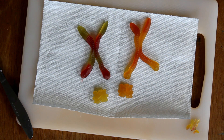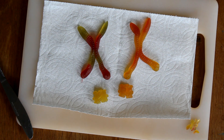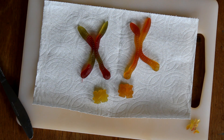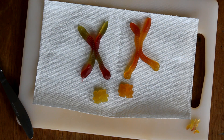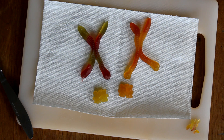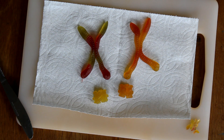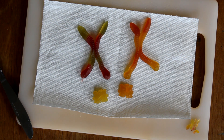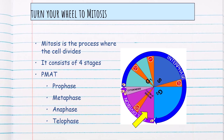Now we are ready to start mitosis. As G2 ends, we begin mitosis — the actual process of cell division. This is how one cell becomes two, how you make more cells. Mitosis is divided into four main phases: prophase, metaphase, anaphase, and telophase.